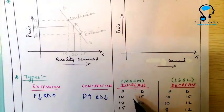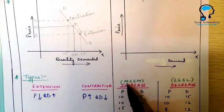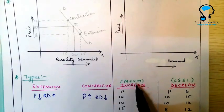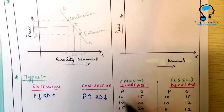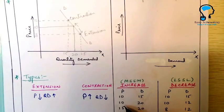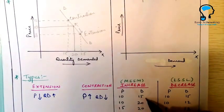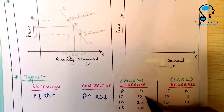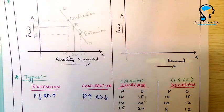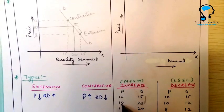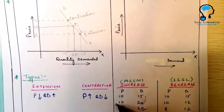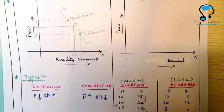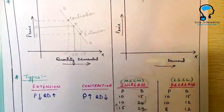Increase in demand happens — you can remember it like this — when more is demanded at the same price, and the same is demanded at a higher price. For example, price is 10 and demand is 15; again price is still 10 but the demand has increased from 15 to 20. More is demanded at the same price, and also the same demand is maintained at a higher price, meaning there is an increase in demand.